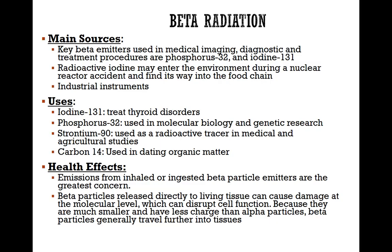The main sources of beta particles are mostly medical imaging, diagnostic, and other treatment procedures, as well as iodine-131, which is used in nuclear reactors. As a result of accidents, it can be released into the food chain and into the environment. Several industrial instruments also use beta radiation. Uses include: iodine-131 to treat thyroid disorders; phosphorus-32 in molecular biology and genetic research; strontium-90 as a radioactive tracer in medical and agricultural studies; and carbon-14 for dating organic matter to determine the age of rocks and materials.